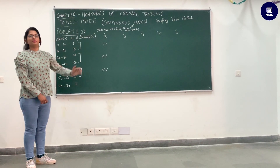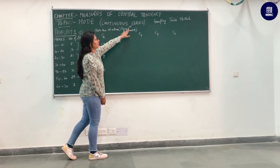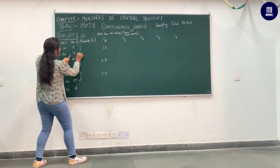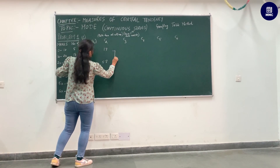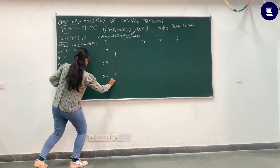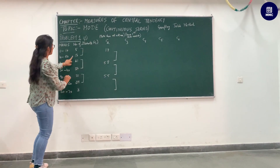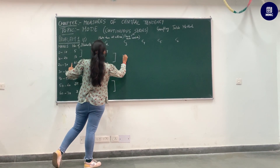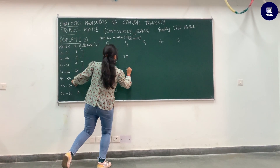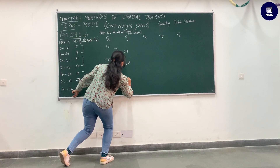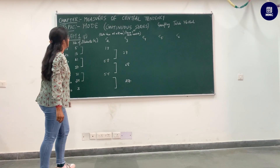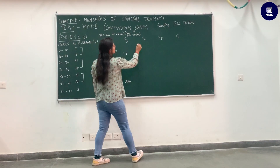For column number three, we have to leave the first value and take the next two. Omit 5 and take 32 plus 21. Next, 37 plus 31, and then 24 plus 3. So 13 plus 21 equals 34, next 37 plus 31 equals 68, and then 24 plus 3 equals 27.